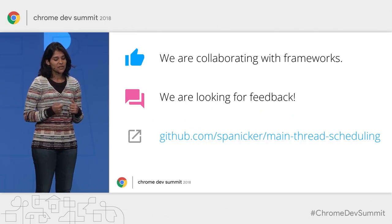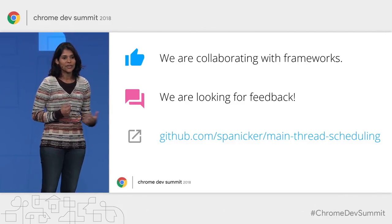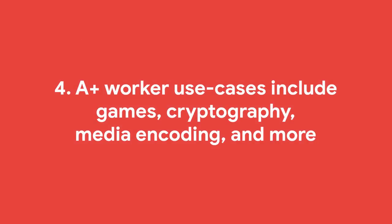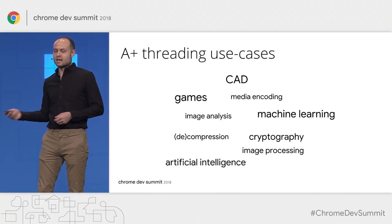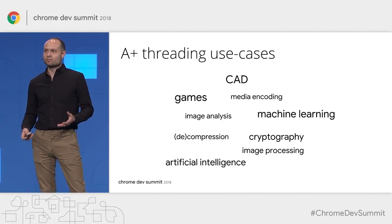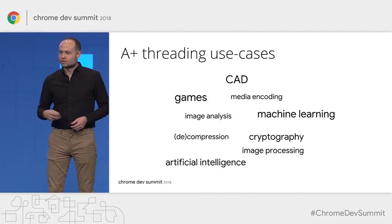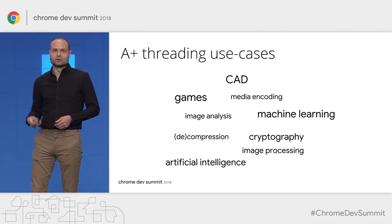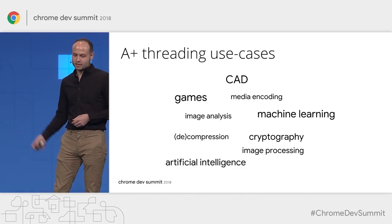This is a link to our GitHub repo. Filing issues on the repo is a great way to get that feedback dialogue going. If you are building a computer-aided design tool, a game, or doing encoding, these are great places to just start with threads. The same thing for AI, machine learning, and crypto — if these are the types of things you are doing, you should start there.